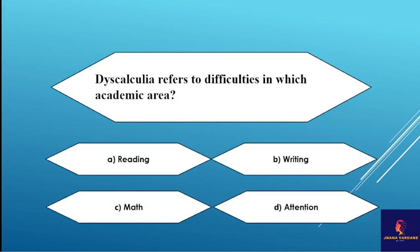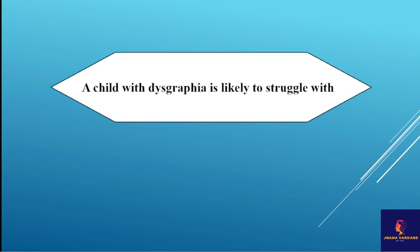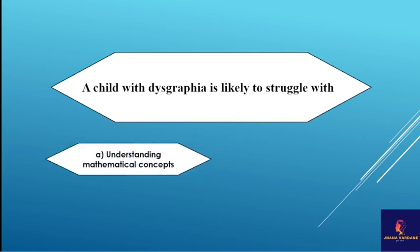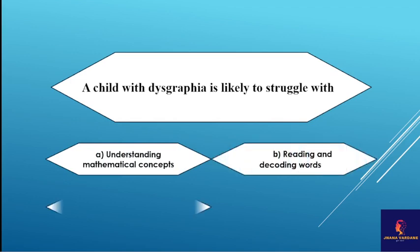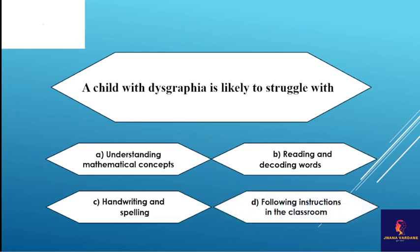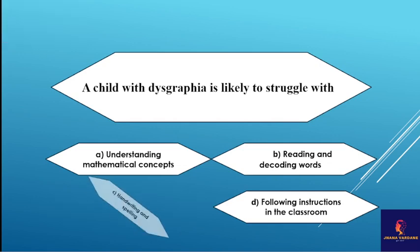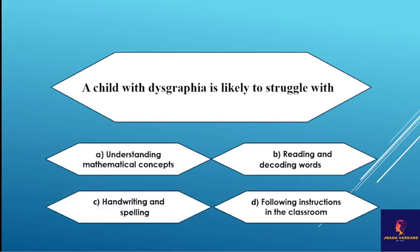This dyscalculia refers to maths. Next question: a child with dysgraphia is likely to struggle with — options: understanding mathematical concepts, reading and decoding words, handwriting and spelling, or following instructions in the classroom. The correct answer is handwriting and spelling. Dysgraphia is related to handwriting and spelling.